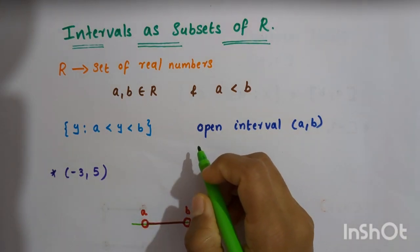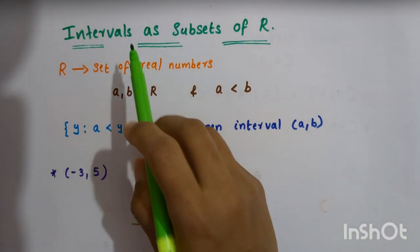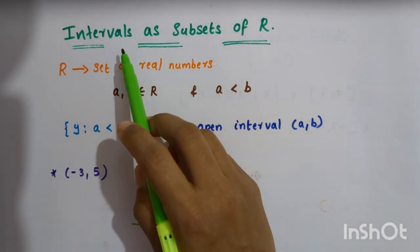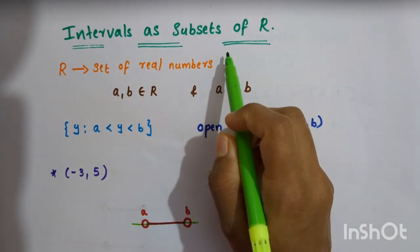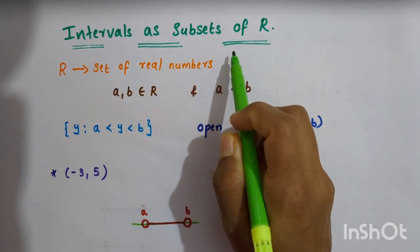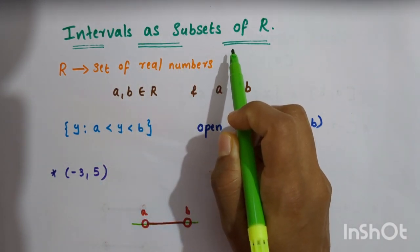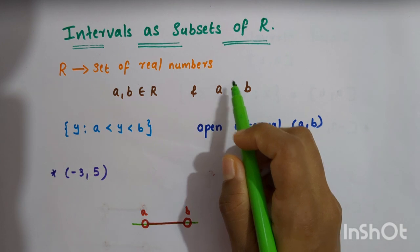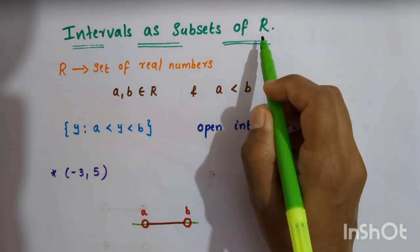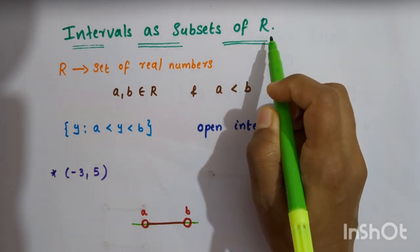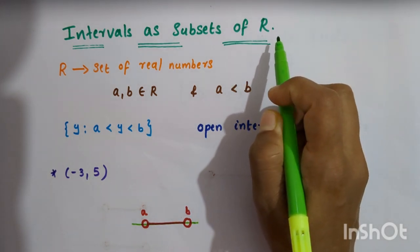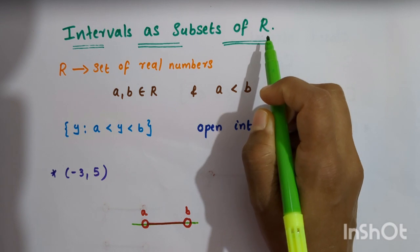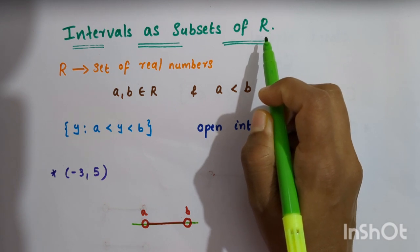Hello everyone. In this video we are going to discuss about the topic: intervals as subsets of R. R is the set of real numbers, that means rational numbers plus irrational numbers will be there in the set of real numbers.